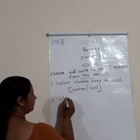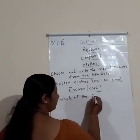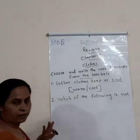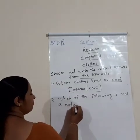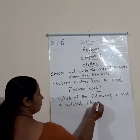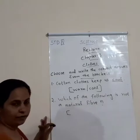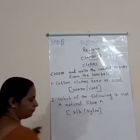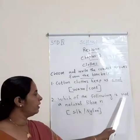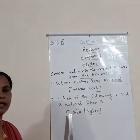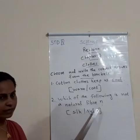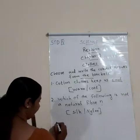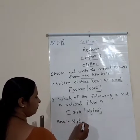Second question: which of the following is not a natural fibre — silk or nylon? Silk is a natural fibre, so the correct answer is nylon.